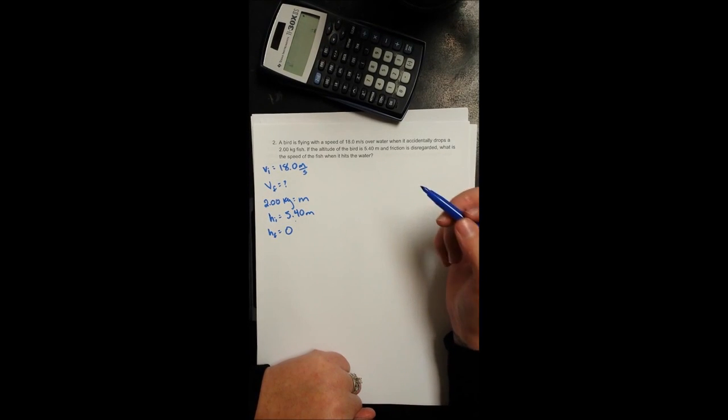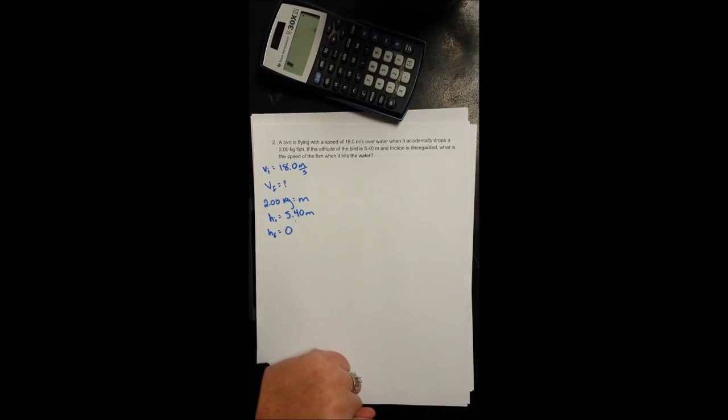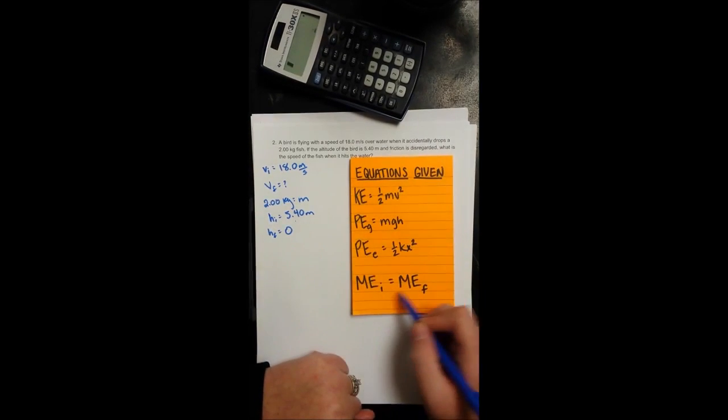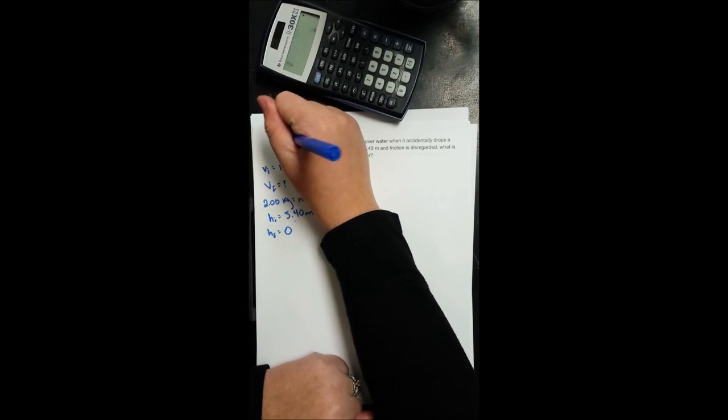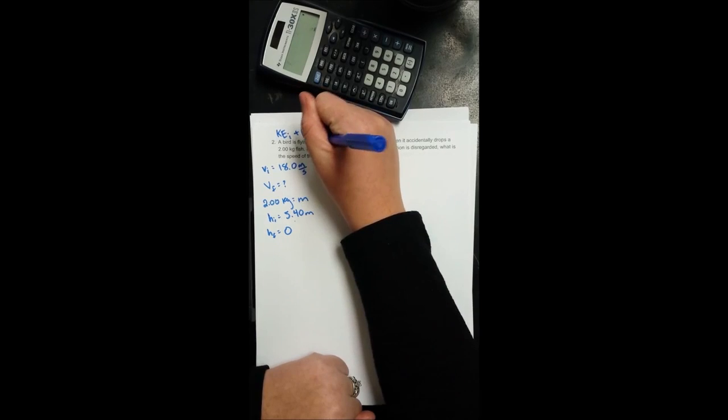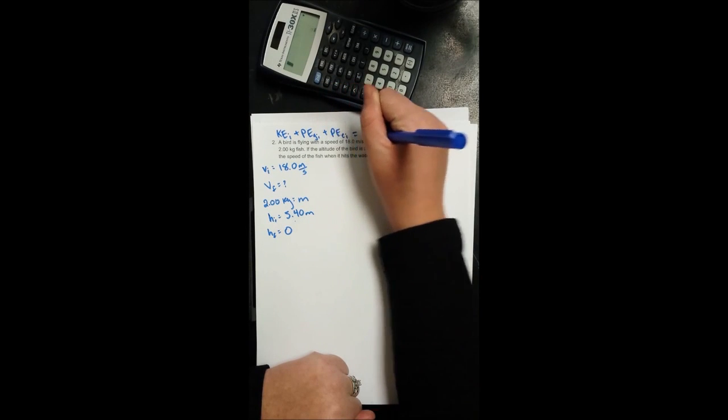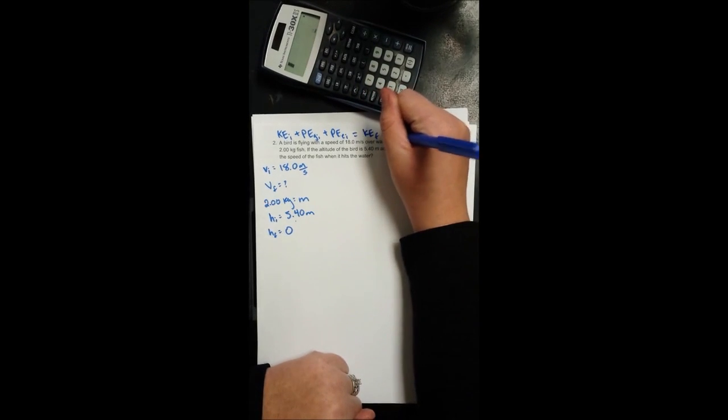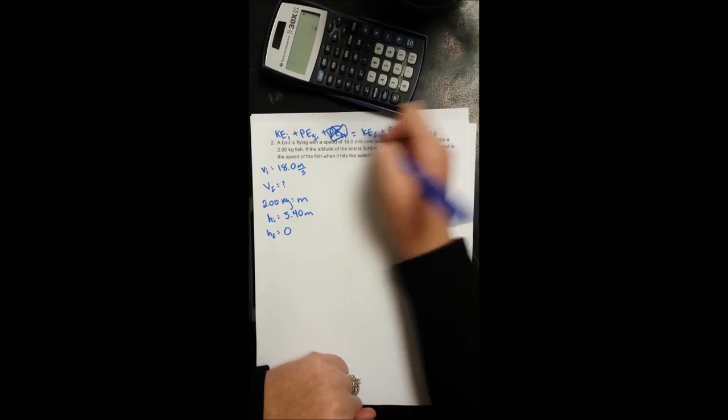Trying to find the speed of the fish when it hits the water. Nothing's being stretched or compressed, but go ahead and write out your conservation of mechanical energy. Initial kinetic plus initial gravitational potential plus initial elastic potential equals final kinetic energy plus final gravitational potential plus final elastic potential. We know we're not using anything stretched or compressed.